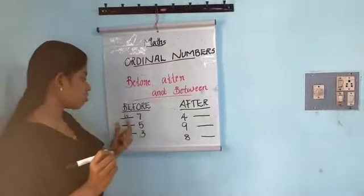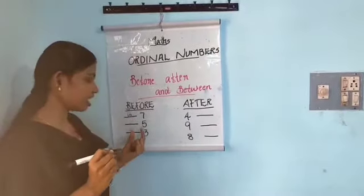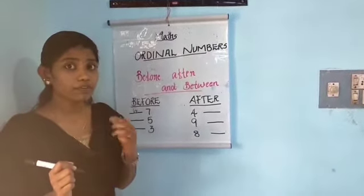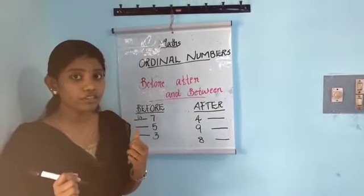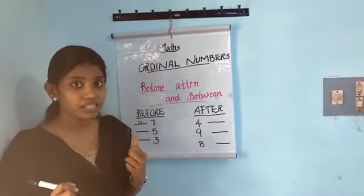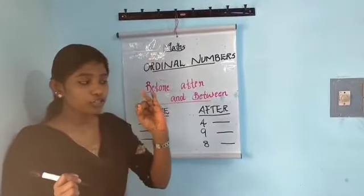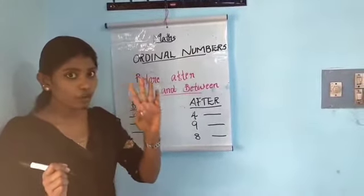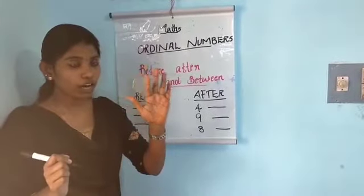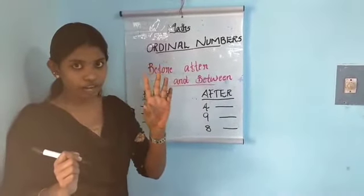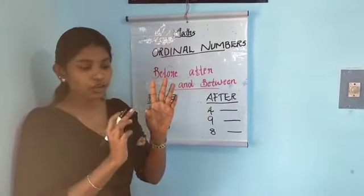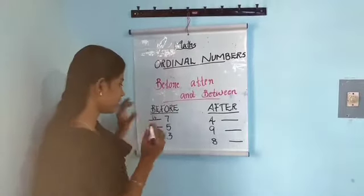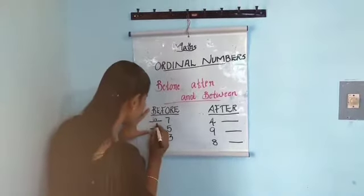Next: there is a blank and then five. What number comes before five? Counting: two, three, four, five — four comes before five. So we write four in the blank.